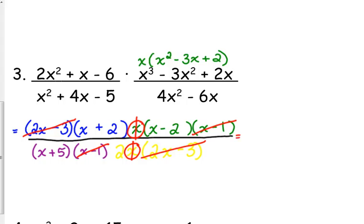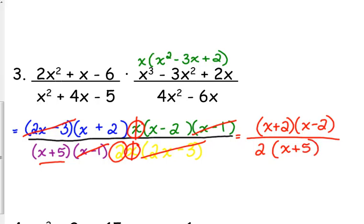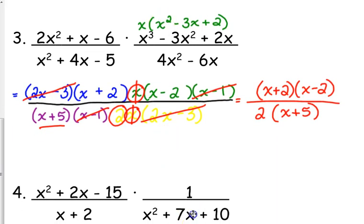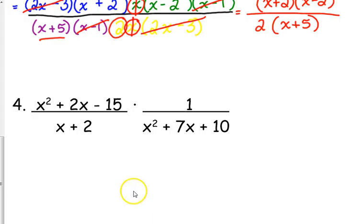And that's it. So what we have left in the numerator, we have x plus 2 times x minus 2. In the denominator, coefficients need to go in the front. So that 2 needs to go first. And then x plus 5 is the only linear factor that we have left down there in the denominator. So that is fully simplified. One more like this.